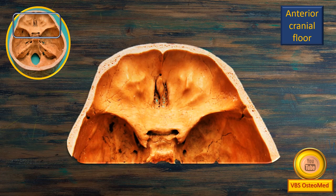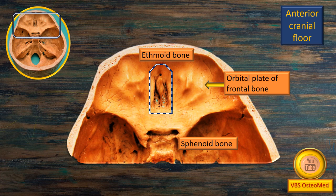The area highlighted by the box in the small photograph has been blown up for a magnified view. Notice the following: this area is the anterior cranial floor — the floor of the anterior cranial fossa. We see the following bones: shown in a blue and white dotted quadrangular area is the ethmoid bone. On either side of the ethmoid bone is the orbital plate of the frontal bone. Behind the ethmoid bone, shown by a flashing arrow, is the sphenoid bone. These are the three bones that contribute to the anterior cranial floor.